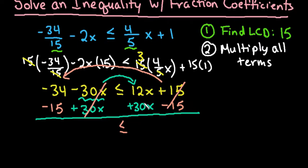So now we would just simplify. 12 plus 30 gives me 42x, and 34 plus 15, because they are both negative, I'm just going to add them together. 34 plus 15 gives me 49, and since they are both negative it would be negative 49.